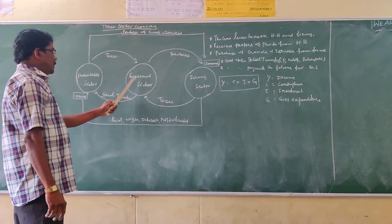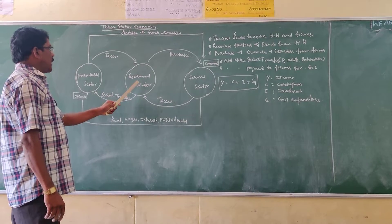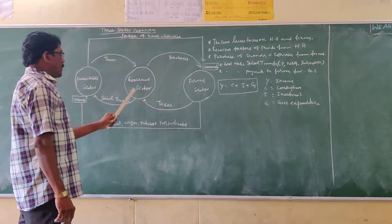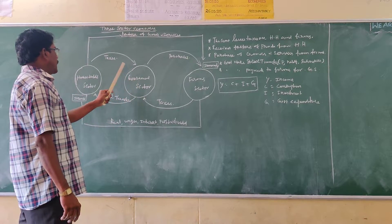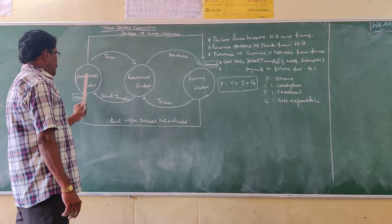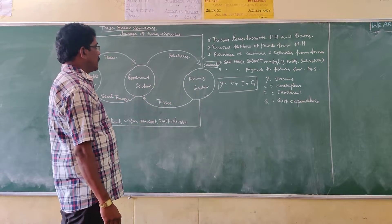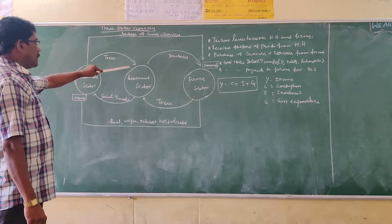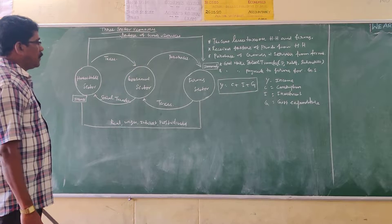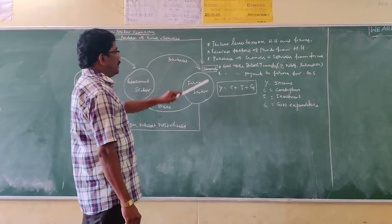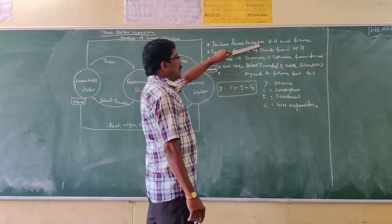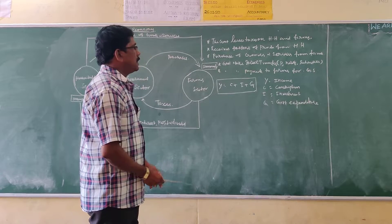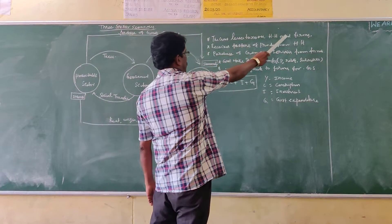The illustrated chart explains the following five points. Number one, the government sector levies taxes on the household sector as well as the firm sector.